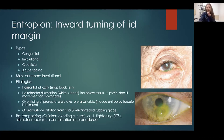Treatments can be temporizing — there's a type of suture that can evert the eyelid again, just temporarily. Ultimately, we need to do a type of lid tightening procedure or repair those lower lid retractors.